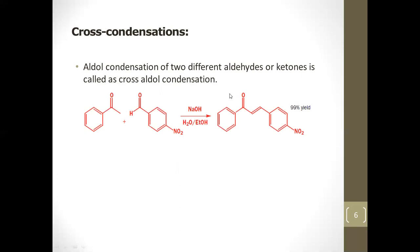In the cross aldol condensation, the alpha hydrogen of the ketone is removed, and that carbon attacks the electrophilic carbonyl carbon of the aldehyde. The hydroxyl and a proton are then removed to give the alpha-beta unsaturated carbonyl product. The yield in this example is 99%, nearly quantitative.